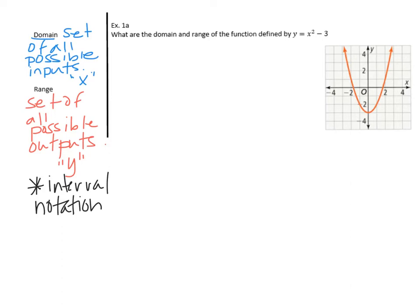Let's take a look at this picture on the right. What are the domain and range of the function defined by y equals x squared minus 3? Because it's x squared, that's a quadratic function, and the minus 3 means we've translated it. If you look at the picture, it just moved down 3 units.